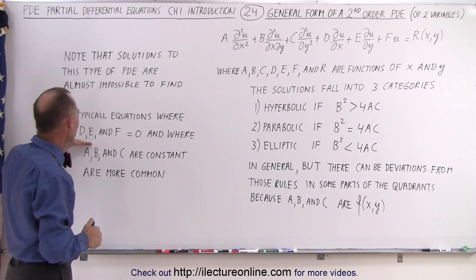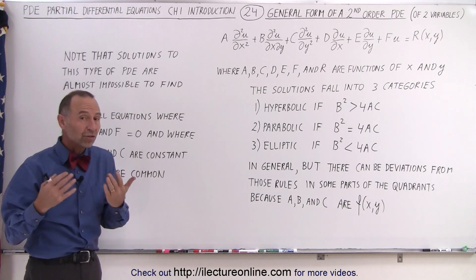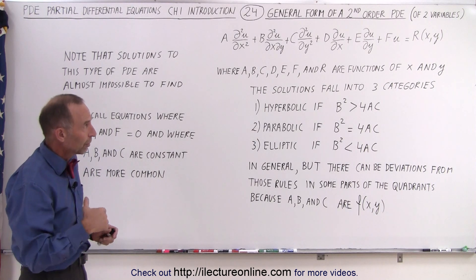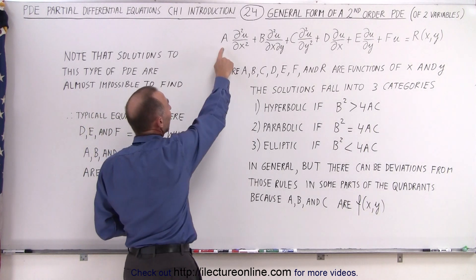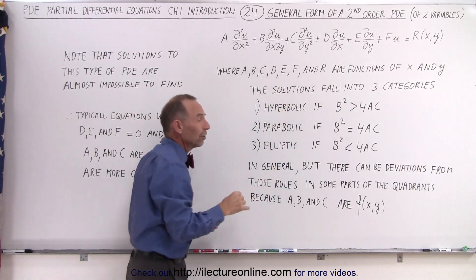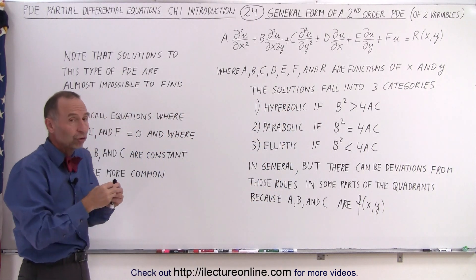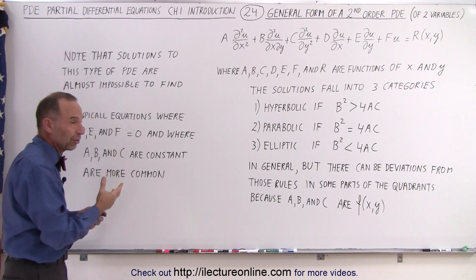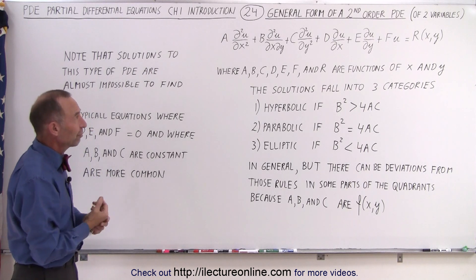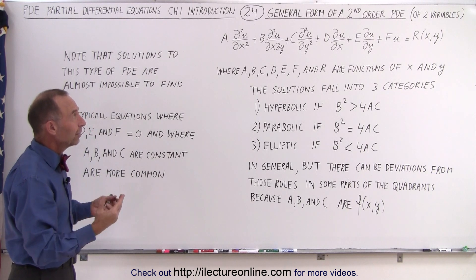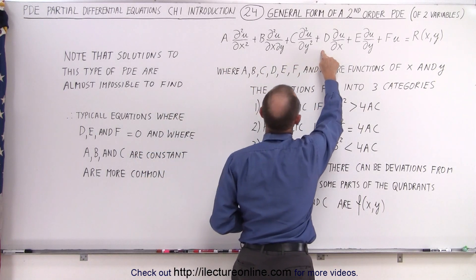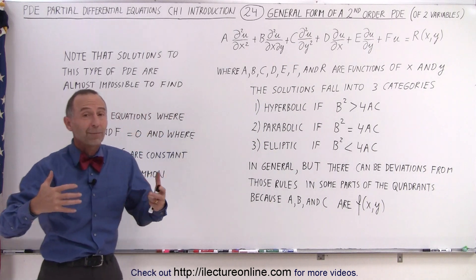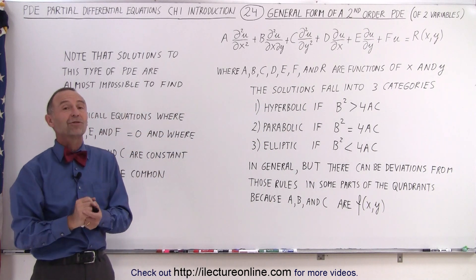By all means, D, E, and F tend to be zero. One more simplification: in most applications of the second-order partial differential equation, A, B, and C are not actually functions of X and Y — they're actually just constants. So if A, B, and C become constants, which is a much more common situation, and we have those three terms equal to zero, then all of a sudden it actually becomes possible to solve these partial differential equations.